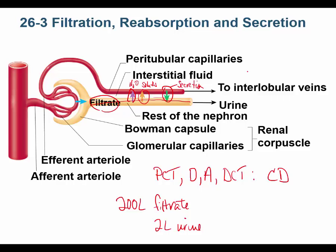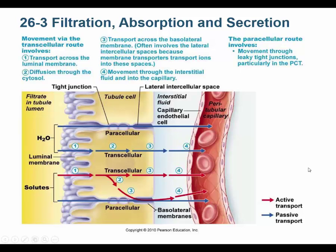Reabsorption and secretion are two events that modify the filtrate — they change it from what it initially is at the Bowman's capsule. We have the paracellular pathway, which goes between cells. We have tight junctions, but they're weak — they don't make a complete barrier — so things can get in between the cells via the paracellular route.